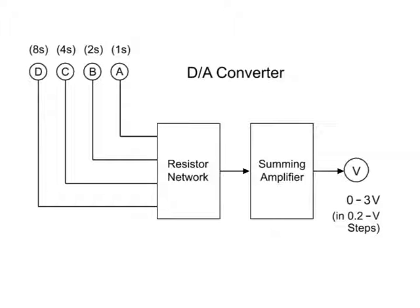This block diagram shows a digital-to-analog converter with four digital inputs that pass through a resistor network. A summing amplifier alters the voltage output that can vary from 0 to 3 volts at increments of 0.2 volts.